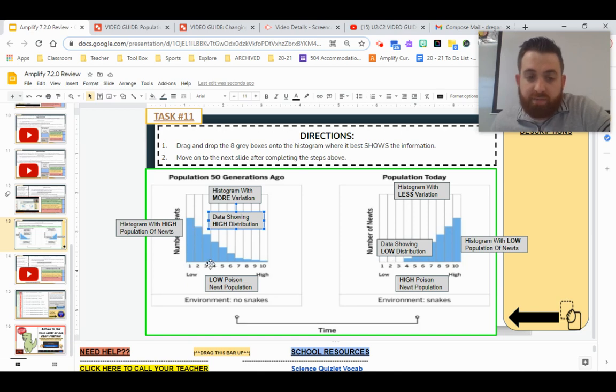So remember, each set of bars represents a group of newts. So essentially, we have 10 groups of newts versus over here, we only have seven groups of newts, and their distribution is about the same minus those three sections there.